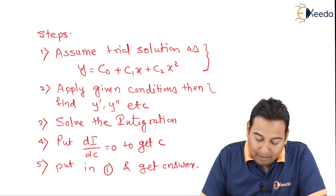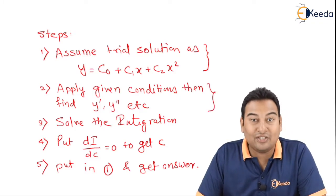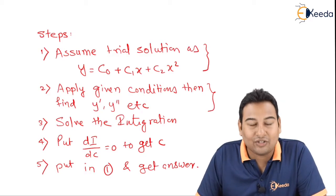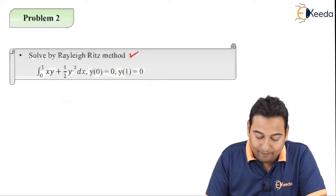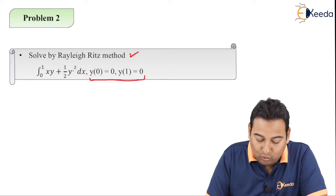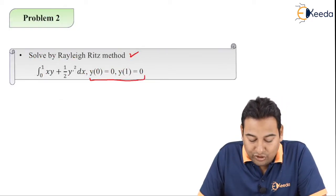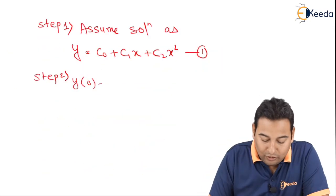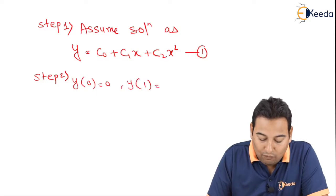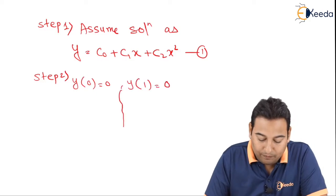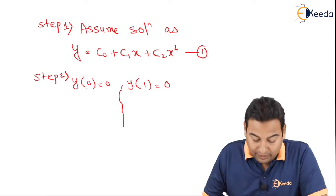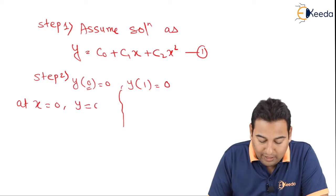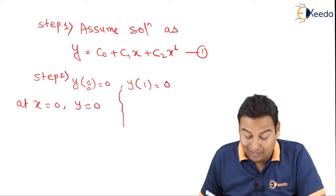Step 2: Apply the given conditions — the initial conditions — and find y' and y''. The two conditions given in the problem are y(0) = 0 and y(1) = 0. The first condition means at x = 0, y = 0, and the second condition means at x = 1, y = 0.